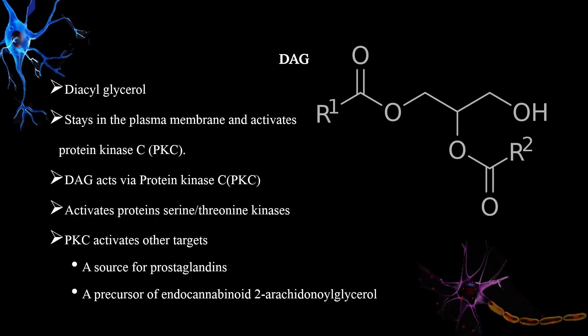Diacylglycerol (DAG) stays in the plasma membrane and activates protein kinase C. Protein kinase C then activates other protein targets. Diacylglycerol is also a source for prostaglandins and is a precursor of the endocannabinoid 2-arachidonoylglycerol.